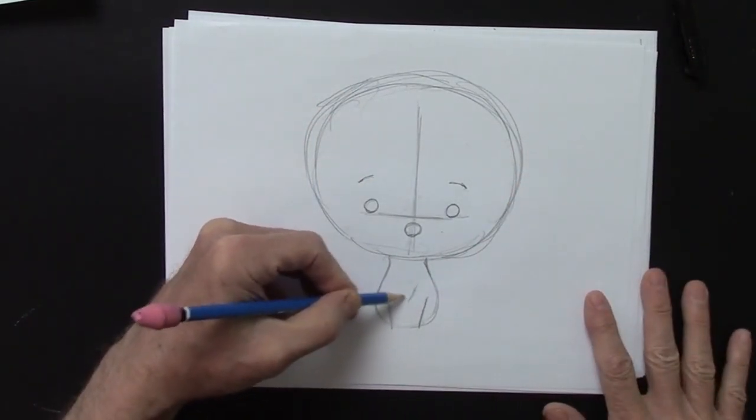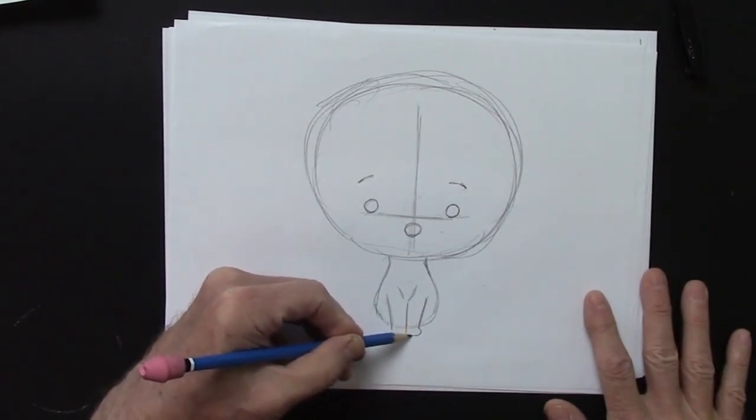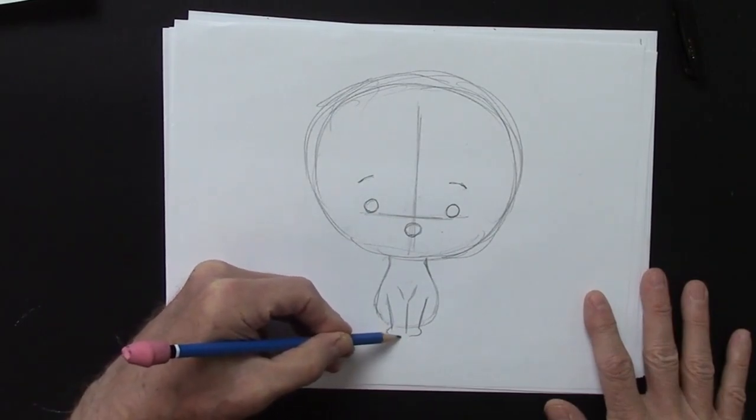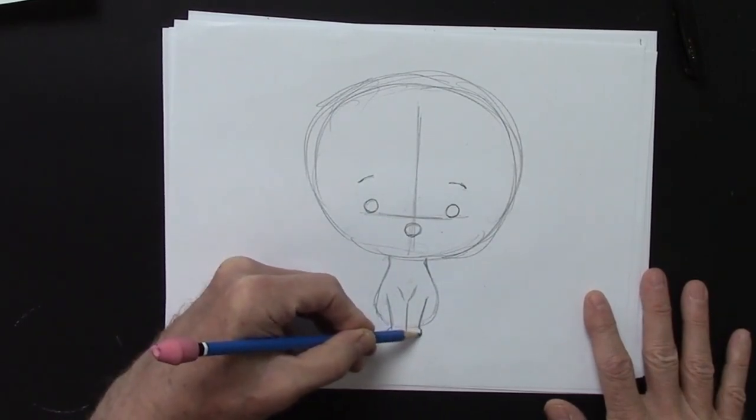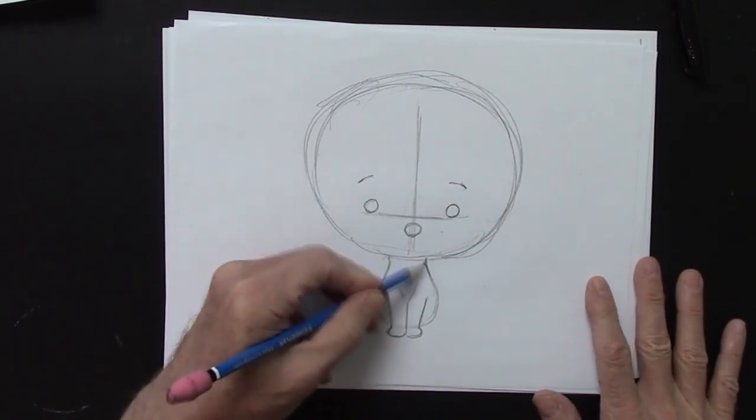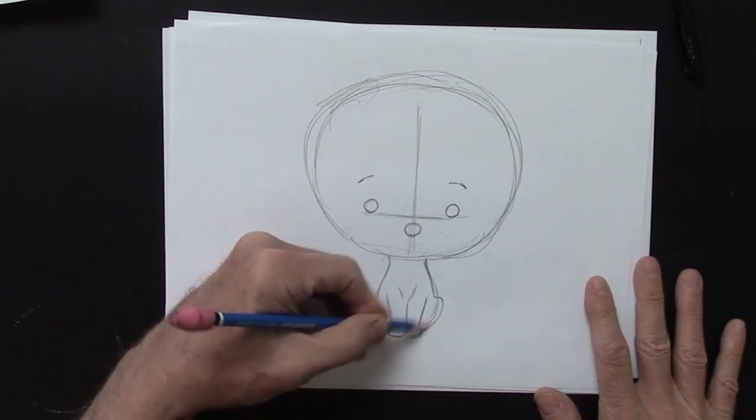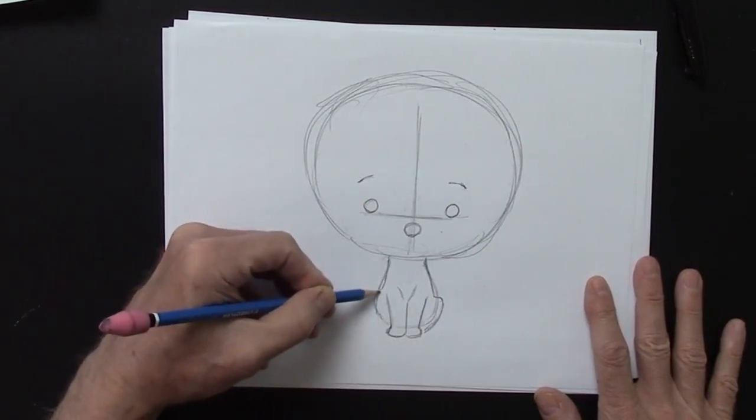Put a little V here. See that little V? And then bring it straight down, and bring out little pads for feet. Like that. Now, I'm going to make this a little more slender here, and bring this out for the thigh, bottom leg. Bring this out for the bottom leg.